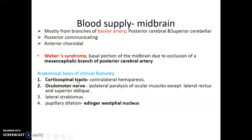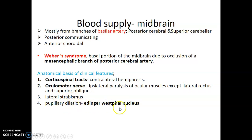When there is occlusion of the mesencephalic branch of the posterior cerebral artery, you get Weber syndrome. Corticospinal tracts are within the midbrain, so occlusion gives contralateral hemiparesis — decussation occurs at the pyramids. The oculomotor nerve comes from the midbrain at the level of the superior colliculi, so there is ipsilateral paralysis of all ocular muscles except lateral rectus (supplied by abducens) and superior oblique (supplied by trochlear nerve), giving lateral strabismus. Pupillary dilatation (mydriasis) occurs because the Edinger-Westphal parasympathetic nucleus of the oculomotor nerve is affected, allowing sympathetic nerves to act unopposed.